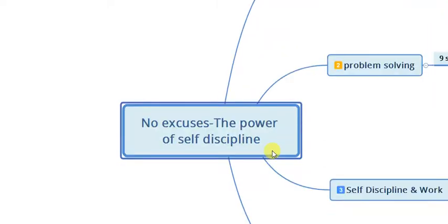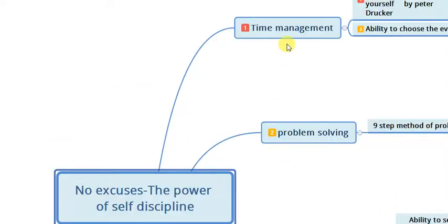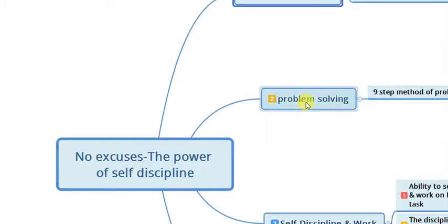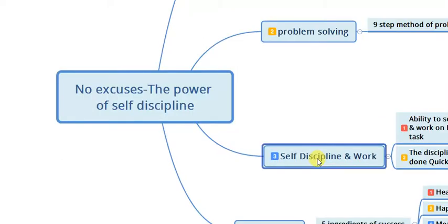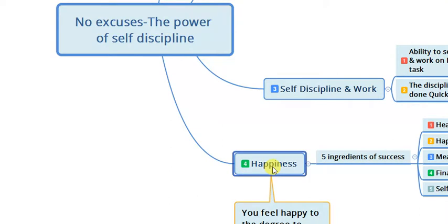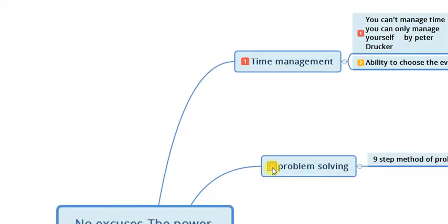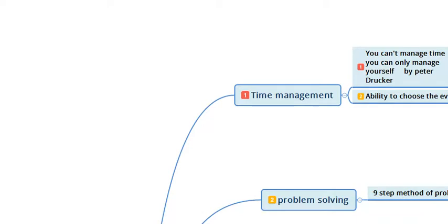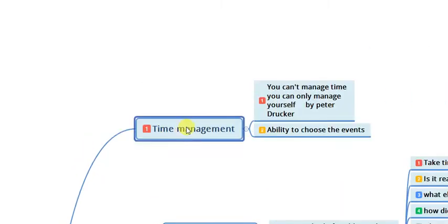In this book there are four things discussed. The first thing for using the power of self-discipline is time management. The second thing is problem solving. The third, most important thing, is self-discipline and work. The fourth thing is happiness. Let's discuss the first one: time management.